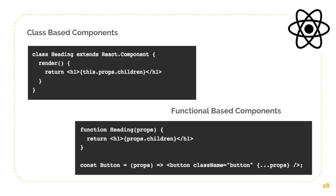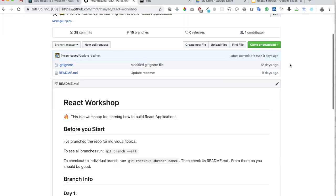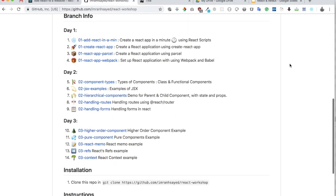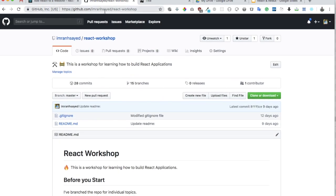You should ideally use a class component when you need to manage state. Use a functional-based component when you are generally dealing with returning some content and not writing a lot of functionality that deals with state — if you just have some props you want to pass in, then use the functional-based component.